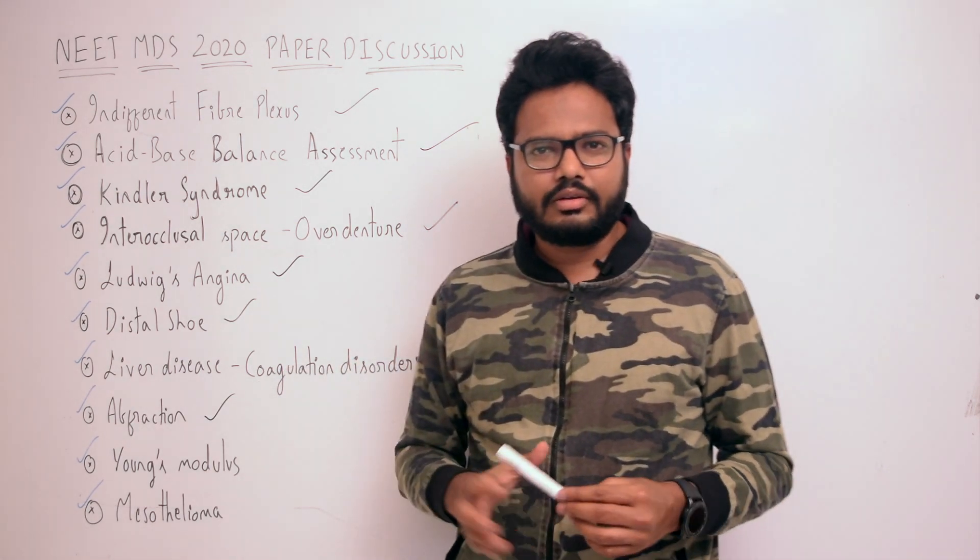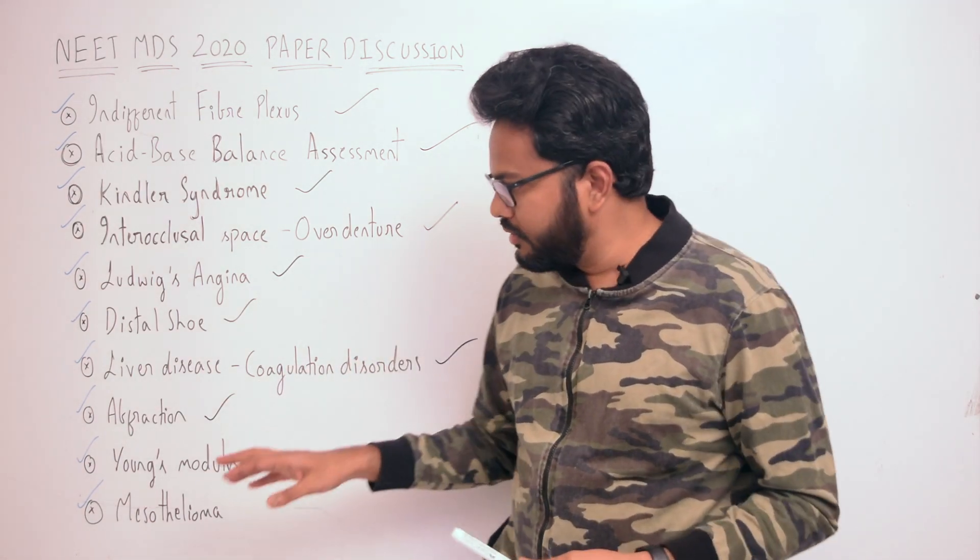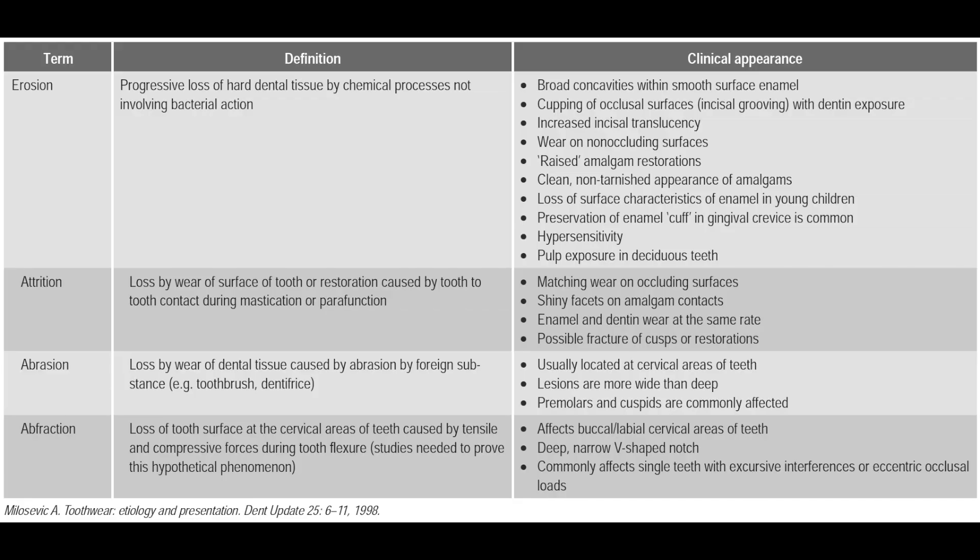Next topic: abfraction. As reviewed in Shafer's, abfraction is defined as loss of tooth surface at the cervical areas of teeth caused by tensile and compressive forces during tooth flexure. Clinically, it affects the buccal or labial cervical areas of teeth as a deep, narrow V-shaped notch, commonly affecting single teeth with excursive interferences or eccentric occlusal loads.